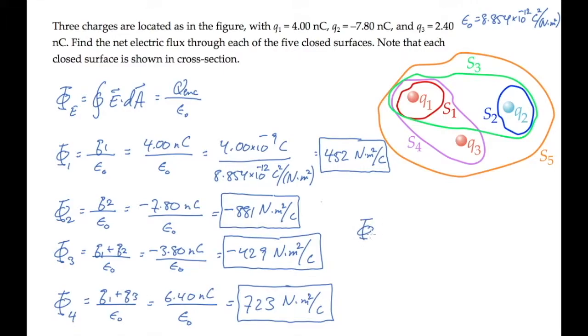And finally, surface five is the orange one, which encloses all three charges. So adding those together, the two positive ones and the one negative one, gives us this net charge. And we divide by epsilon naught to find the flux through surface five.